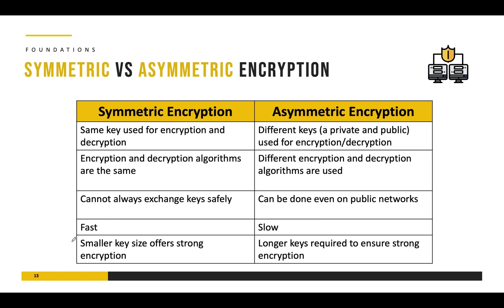Since symmetric encryption is very fast, what we normally do is create the initial secure channel using asymmetric encryption, and once that is in place we exchange symmetric or session keys. We then use symmetric encryption for quick and efficient encryption and decryption of data, while asymmetric encryption is used for the initial establishment of the trusted secure channel. Another difference is that for the same strength, symmetric key encryption requires smaller key lengths compared to asymmetric encryption, because asymmetric encryption needs longer keys to support two different keys for encryption and decryption. That concludes our lecture.